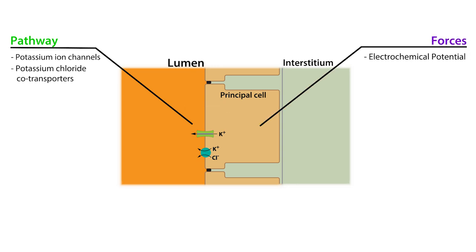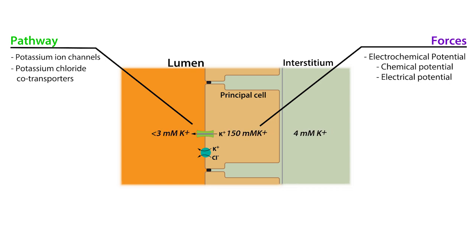Let's divide the electrochemical potential into its two components: the chemical potential and the electrical potential. The potassium chemical potential, or potassium concentration gradient, favors the secretion of potassium into the lumen as well as the interstitial fluid. On the other hand, the electrical potential opposes potassium secretion, especially when it's more negative.